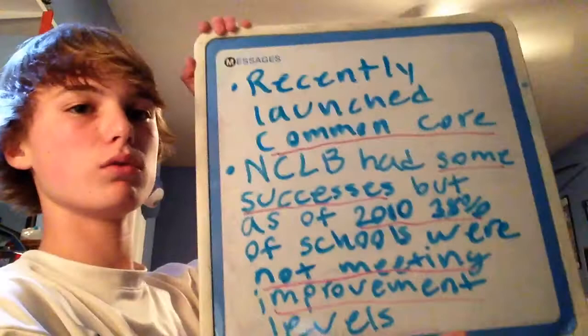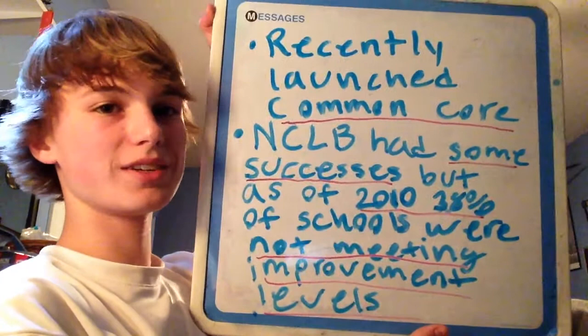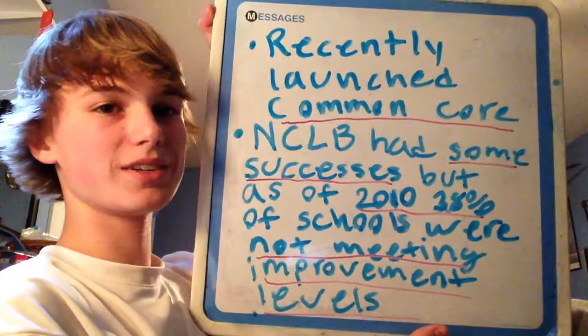As for the accomplishments of the reform movement: they recently launched Common Core, which can be seen as a success. The No Child Left Behind Act has had some successes, but it's still far from perfect and remains controversial. As of 2010, 38% of schools were not meeting the adequate yearly progress set by the No Child Left Behind Act. There are more successes, especially if you look at a more localized area like a town, city, or even a state. But overall, there's still a long way to go.